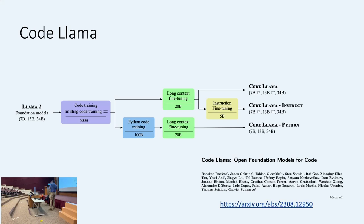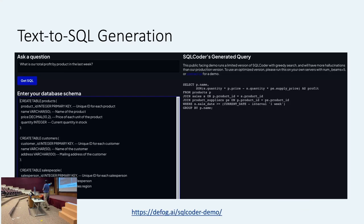With these models, what you get is a model which can generate code and do a number of downstream tasks like fixing bugs. You can chat with the model just like ChatGPT. But typically, if you have a specific problem you want to solve, you would need to fine-tune the model further. I'll introduce one specific problem everyone can relate to: text-to-SQL generation. We want to give a natural language question, provide a database schema as context, and have the model generate the exact SQL query that answers the question.